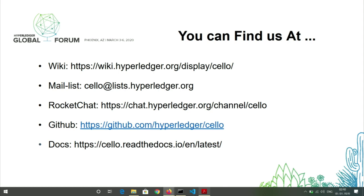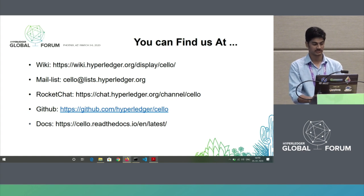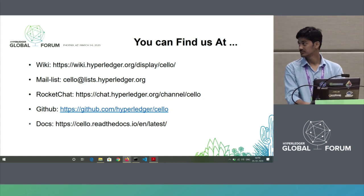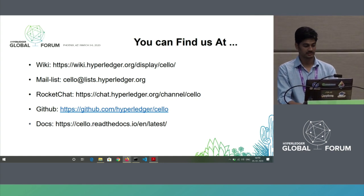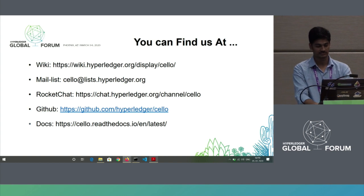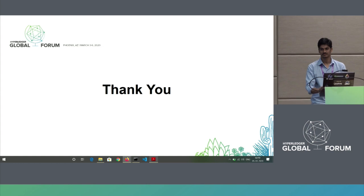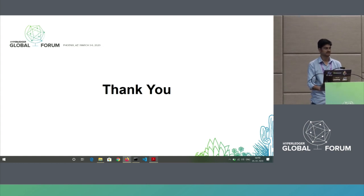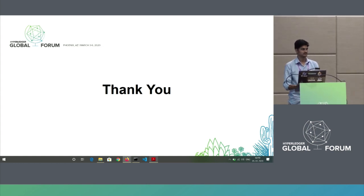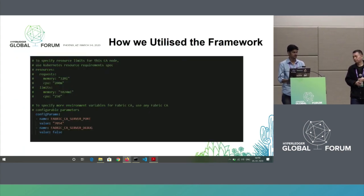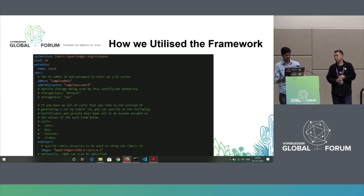You can find the Cello team on Wiki and on our Rocket Chat. All of our code is deployed on GitHub at hyperledger/cello, and you can find the documentation at cello.readthedocs.io. Thank you. — Did you enable TLS on the CA server, or did you do your own TLS? Yes, we did enable TLS on it. You can see we have a TLS certificate and a TLS key, which we can also provide with the YAML file.